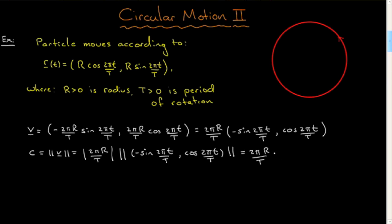This result makes perfect sense because 2πR, that is the circumference of the circle, is the distance it goes in one period, and T is the period. So that is the distance traveled per time, so that's the speed, so that'll make sense.